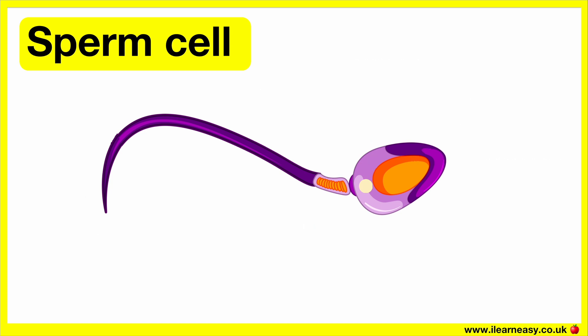The sperm cell is small and long. It passes on its nucleus to the egg in order to fertilise it. It contains 23 chromosomes. On average, a male releases millions of sperm, to increase the chances of fertilisation. The sperm cell is well adapted to its function.